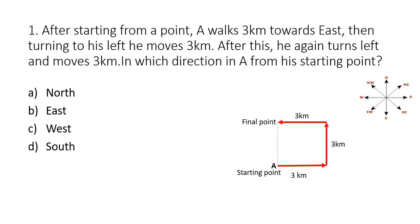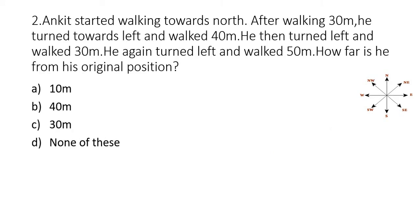Let's move to the second example. Ankit started walking towards north. After walking 30 meters he turned towards left and walked 40 meters. He then turned left and walked 30 meters. He again turned left and walked 50 meters. How far is he from his original position? I'm assuming Ankit as A. As per the question, Ankit started walking towards north — I'm marking the endpoint as B. He turned left and walked 40 meters, marking the endpoint as C.